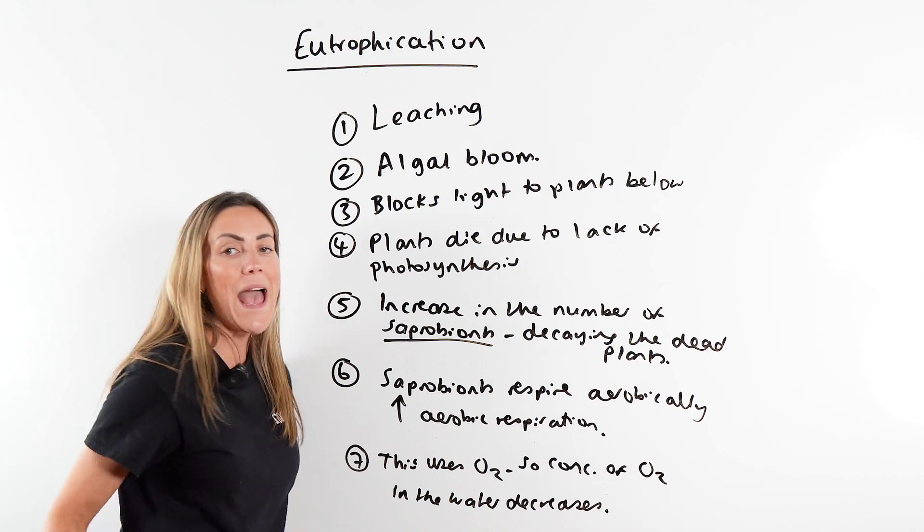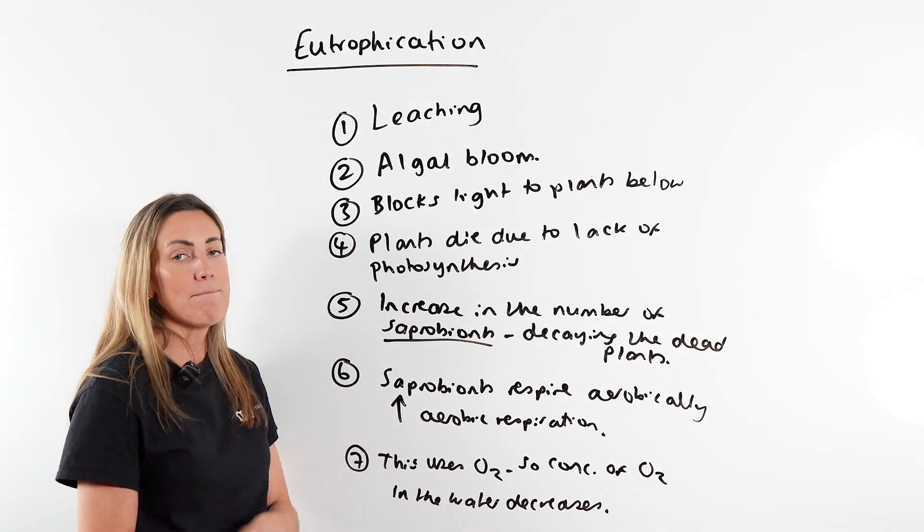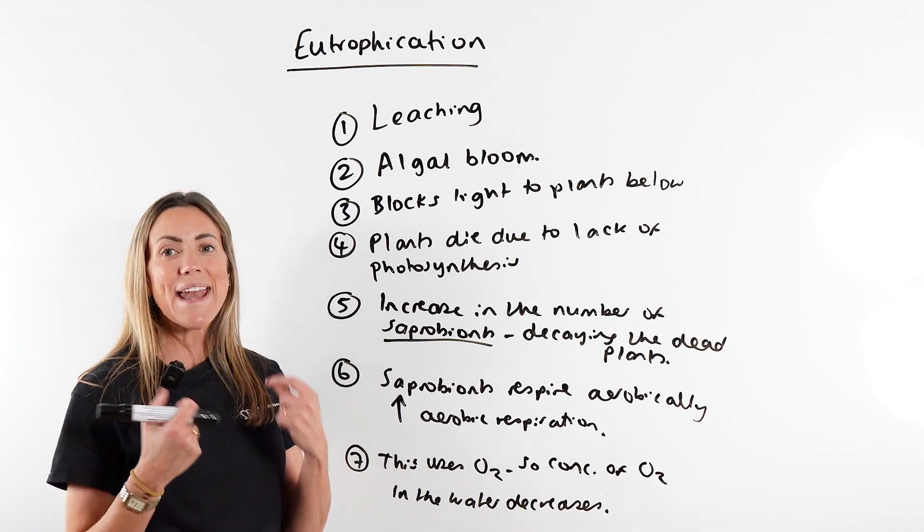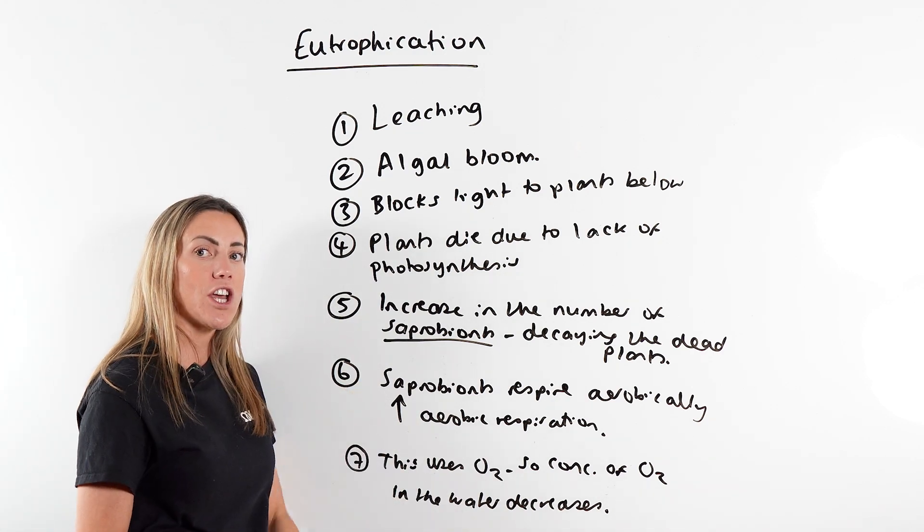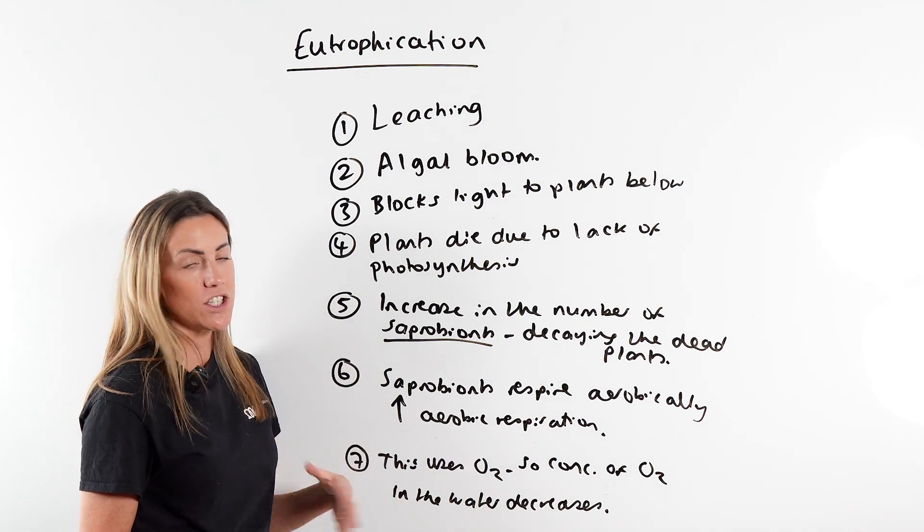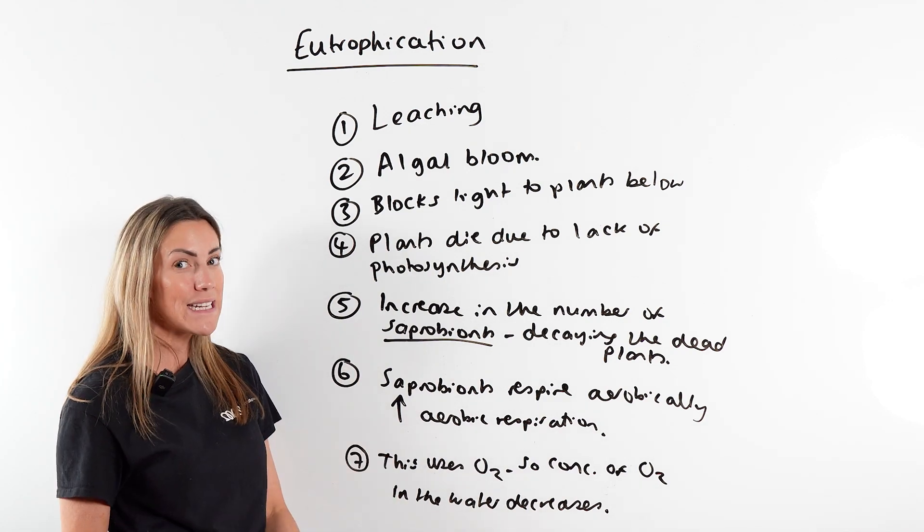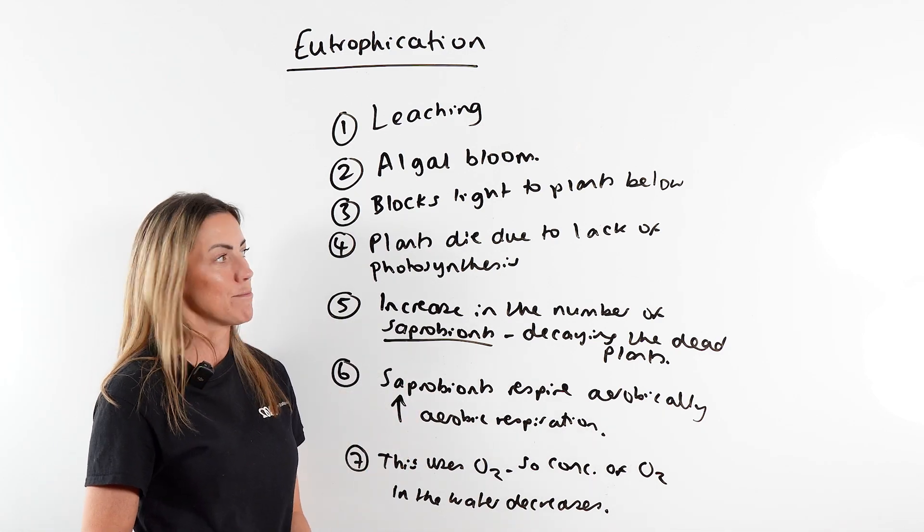So any other animals, for example fish, it might be small little animals or invertebrates - anything that requires oxygen is going to struggle to get enough oxygen for its own aerobic respiration because the concentration of oxygen in the water has been depleted by the increase in saprobionts and their respiration.